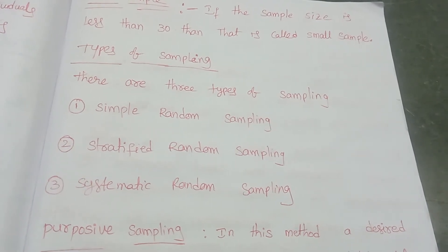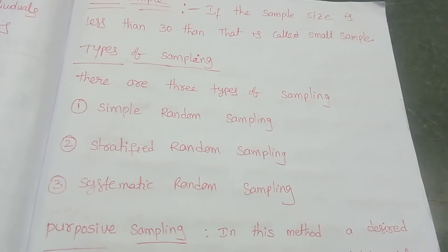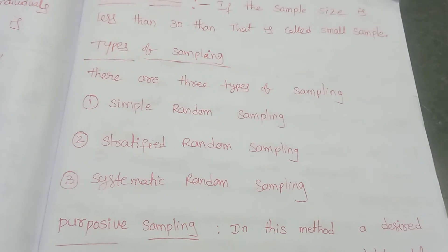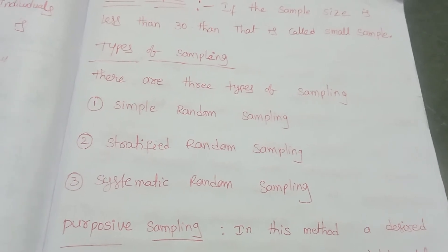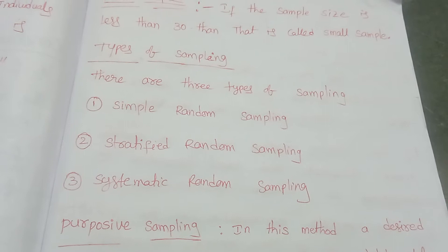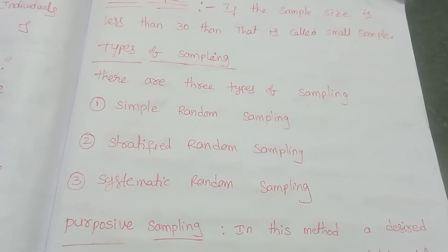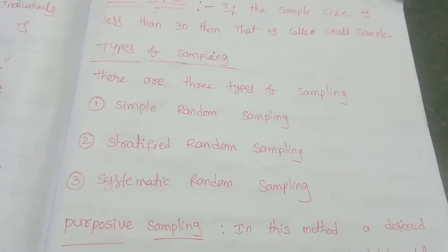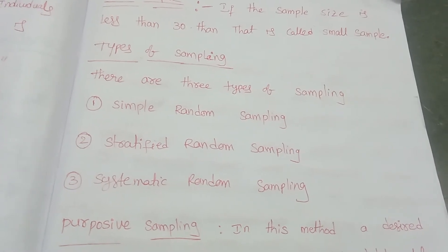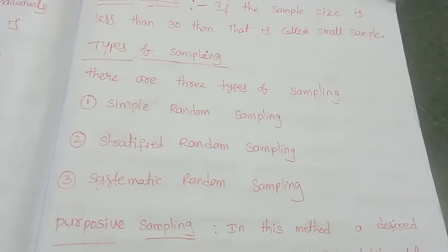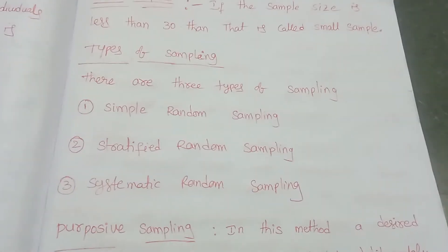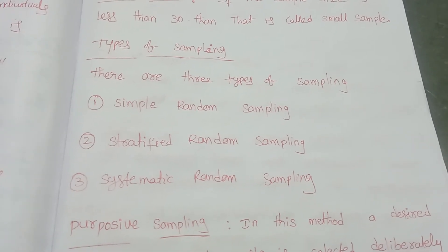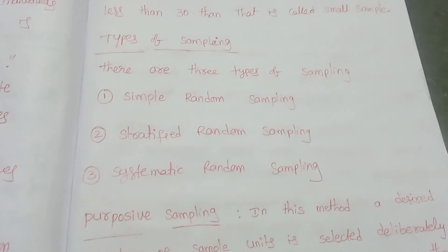The third type is systematic random sampling. In systematic random sampling, I give numbers 1 to 55 and then pick the 1st, 5th, 10th, 15th, 20th, 25th, 30th number — every fifth one. We go in some fixed interval in a systematic manner. That is known as systematic random sampling.